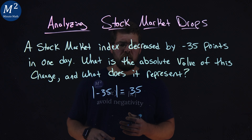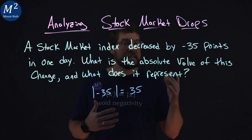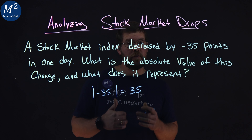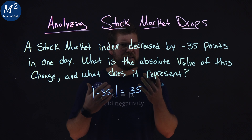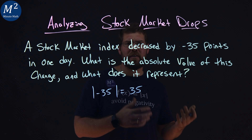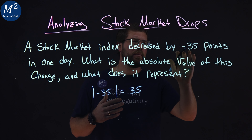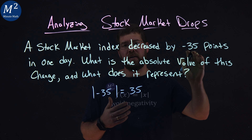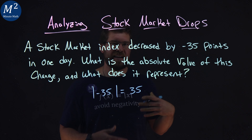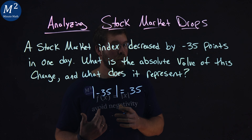What does this mean? Well, if we're talking about just decreased by 35 points, we would write it like that — decreased by 35 points. We don't really write that double negative, decreased by negative 35 points. We say it dropped or decreased 35 points.